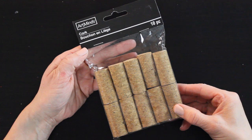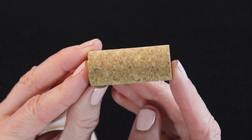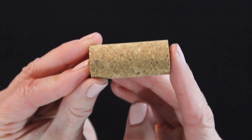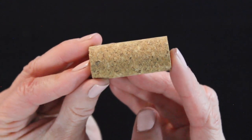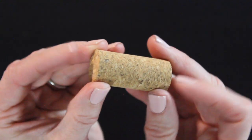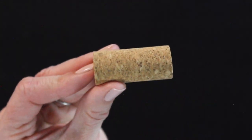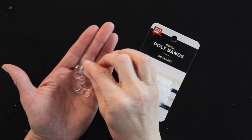To make our gnomes stand up we are actually going to use these corks, so if you are a wine drinker save your wine corks. If not you can absolutely buy these at the craft store. I will put a link below. What we're actually going to do is cut these in half and then the flat side, so the uncut side, is what we'll use to help stand our gnome up.